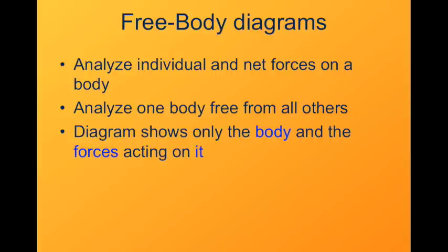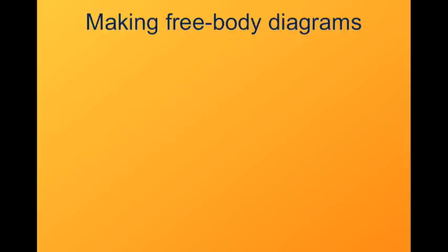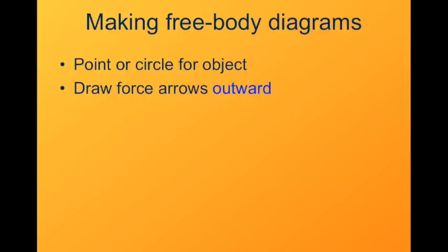So what you show in a free body diagram is an idealized picture of your object, usually just as a point or a ball. And you just look at that body and the forces acting on it, nothing else. Here's how you make a free body diagram. You draw a point or a circle for the object itself, and then you draw arrows for all the forces acting on it. The convention that the book uses and the convention that we're going to use in this class is that you always draw the forces as arrows pointing outward away from the object. Whether it's a push or a pull doesn't matter. The force's direction is always outward.